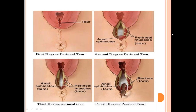First degree tear involves only skin. Second degree perineal tear is how we give episiotomy — it includes external mucosa, perineum skin, and perineum muscles; the anal sphincter remains intact. We generally give a mediolateral episiotomy, not a midline one. Perineal tears generally occur in the midline. In third degree we can see the external anal sphincter is involved. In fourth degree, both vagina and rectum are completely exposed with all layers torn.